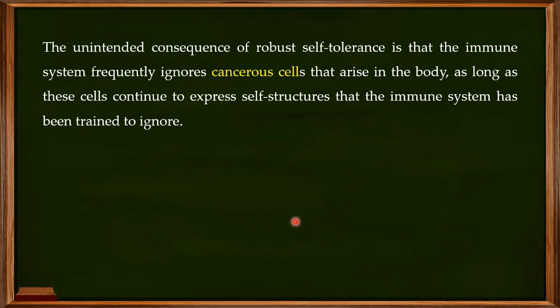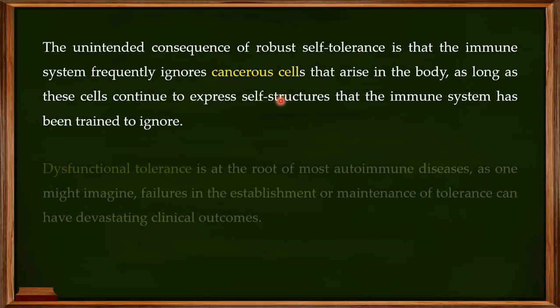One problem with robust self-tolerance is that the immune system frequently ignores cancerous cells that arise in the body, as long as those cancerous cells express self-structures. The immune system is trained to ignore these self-structures, so if a cancer cell produces structures very similar to those on normal cells, the immune tolerance system will not recognize it. This means cancerous cells can replicate and increase in number while the immune system does nothing, because it recognizes them as self, not non-self.